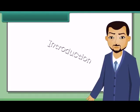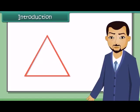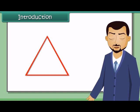We have seen that a triangle has six parts: three sides and three angles. But to construct a triangle, you need to know only three parts. So we can construct a triangle using the SAS, ASA, SSS and RHS axioms.